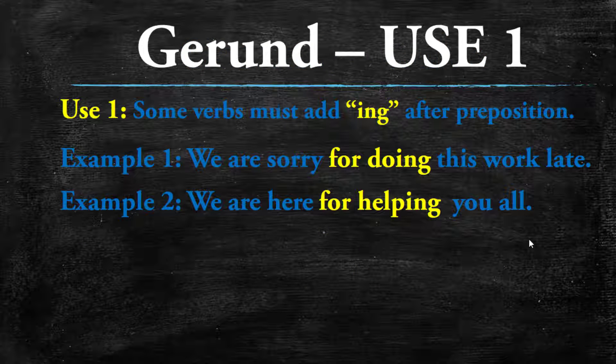Gerund use one: some verbs must add '-ing' after a preposition. Example one: 'We are sorry for doing this work late.' Example two: 'We are here for helping you all.'